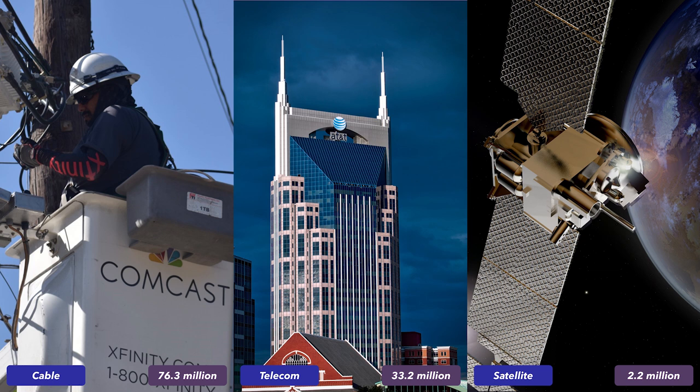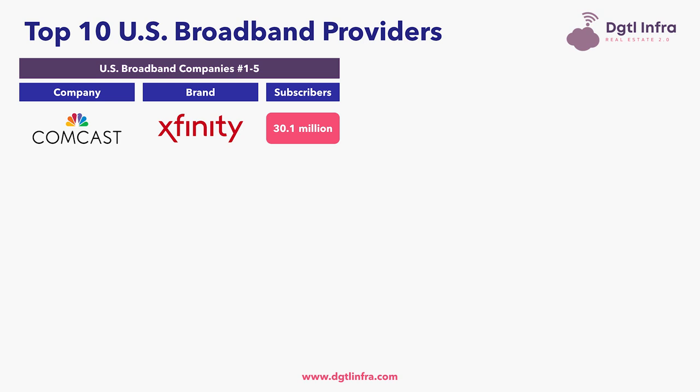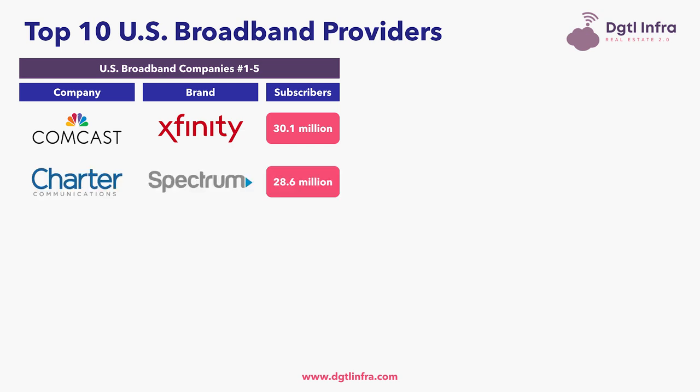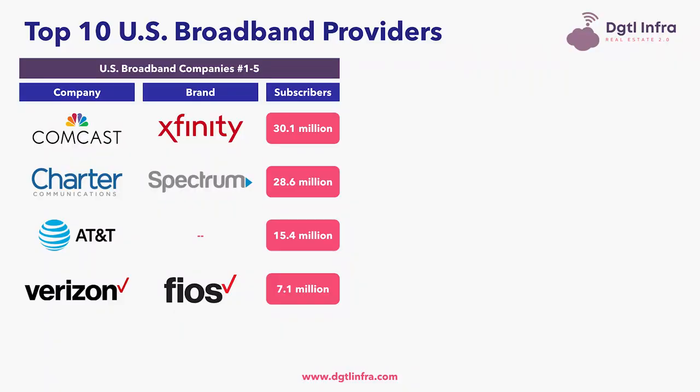Let's run through the top 10 cable and telco broadband companies by subscribers. First is Comcast Corporation, which mainly operates under its brand Xfinity, with 30.1 million broadband subscribers. Second is Charter Communications, operating under its brand Spectrum, with 28.6 million subscribers. Third is AT&T, operating under its flagship brand, with 15.4 million subscribers — it also passes 14 million homes with fiber connectivity. Fourth is Verizon Communications, which for fiber operates under the brand Fios, with 7.1 million subscribers and 18.5 million homes passed with fiber.